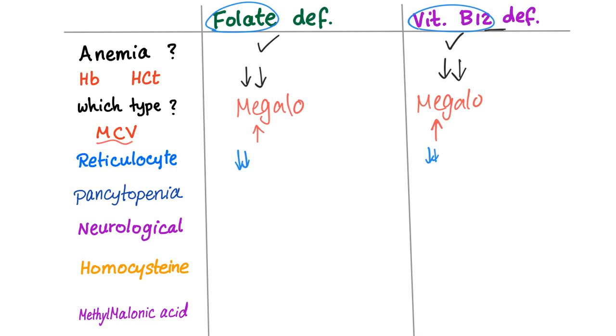The reticulocyte production index will be less than 2.5. If you watch my video on reticulocytes you will know what I'm talking about. What is the reticulocyte? How to correct it? You will know all of that.